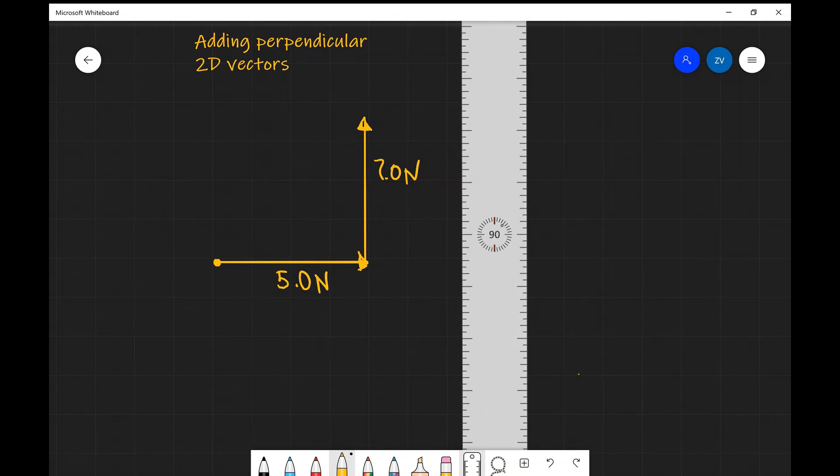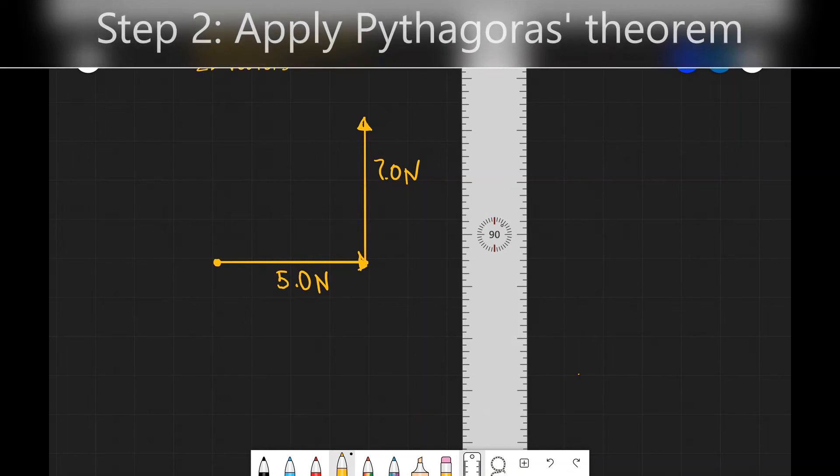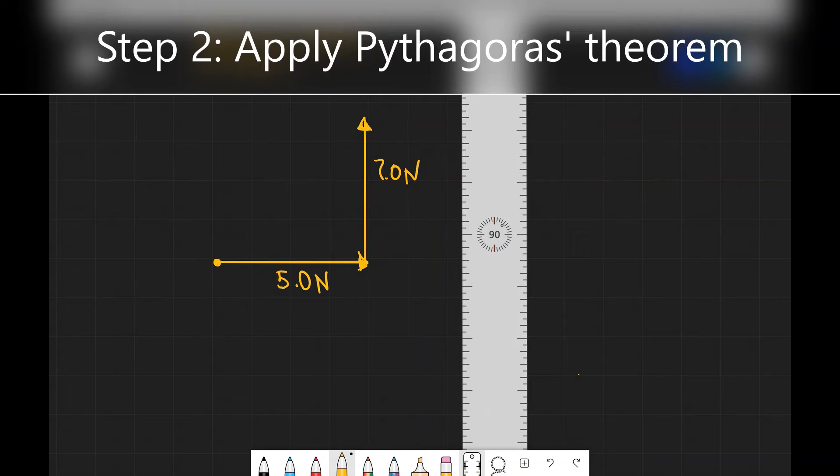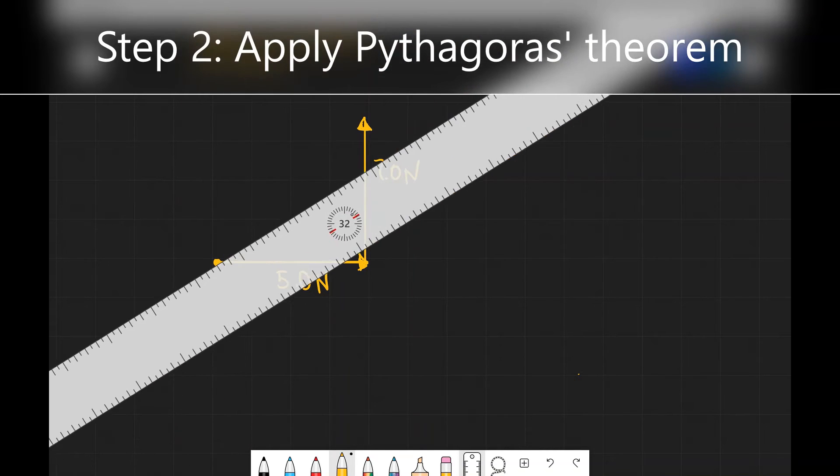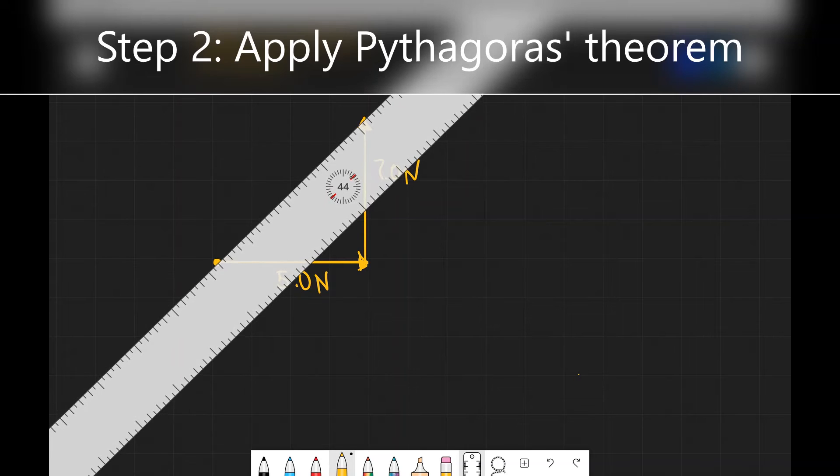Just a little note that I could have equally have moved the 5 newton vector upwards instead, rather than move the 7 newton vector horizontally. There's no preferred vector to be moved and you get the same result whichever vector you actually add. Now moving on to the second step, what we need to do is apply Pythagoras' theorem.